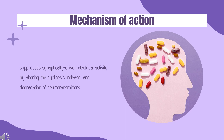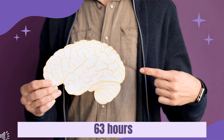Zonisamide suppresses synaptically driven electrical activity by altering the synthesis, release, and degradation of neurotransmitters such as glutamate, aminobutyric acid (GABA), dopamine, serotonin, 5-hydroxytryptamine (5-HT), and acetylcholine. Furthermore, it binds to the GABA/benzodiazepine receptor ionophore complex without producing changes in chloride flux. In vitro studies have suggested that zonisamide does not affect postsynaptic GABA or glutamate responses, nor the neuronal or glial uptake of [3H] GABA. Half-life.